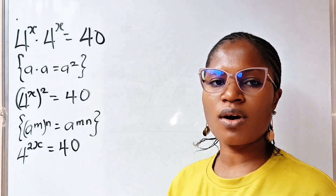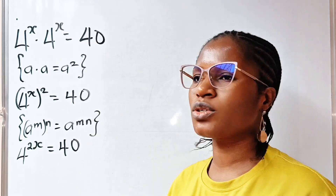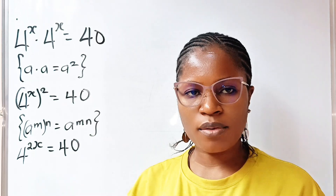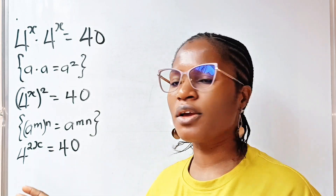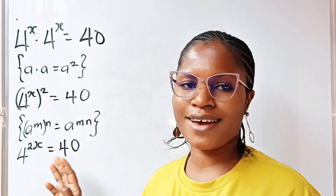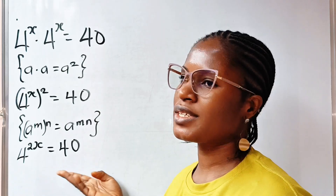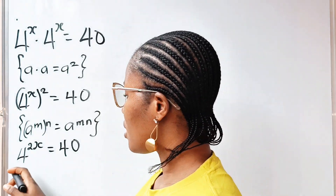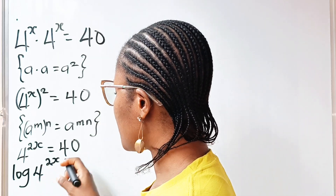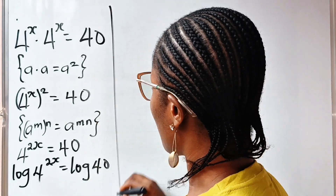Anytime you are solving an exponential equation where the power happens to be a variable, the only way to find its value is to introduce a log to both sides of the equation. So we are going to introduce log to both sides, giving us log of 4 to the power of 2x equals log 40.